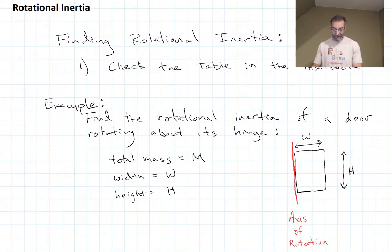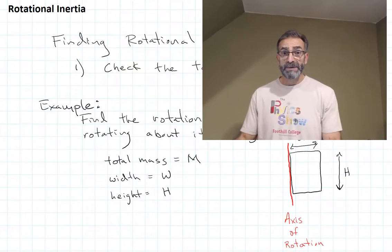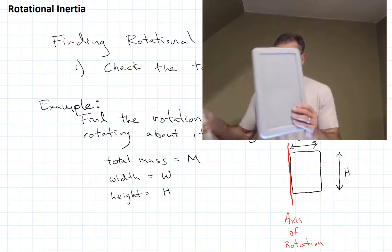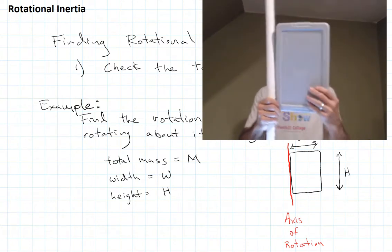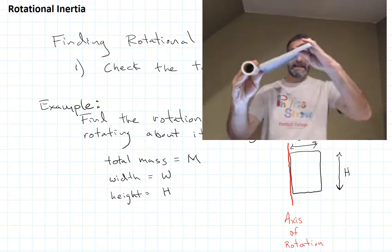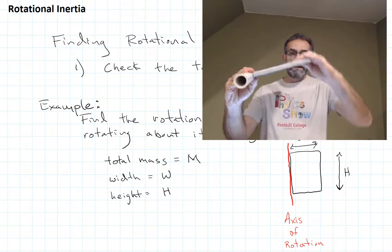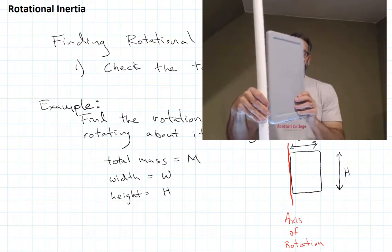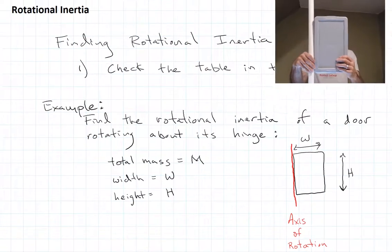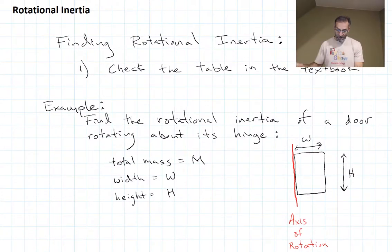Let's take a look at this example. We want to find the rotational inertia of a door rotating about its hinge. If you look at it from the top view looking down at the door, or front view looking at the door swinging in and out, that's what we're trying to find: total mass M, width W, height H. And what do we do? We check the table.